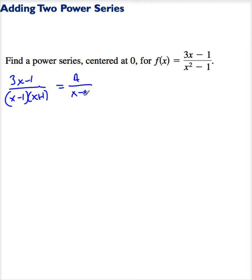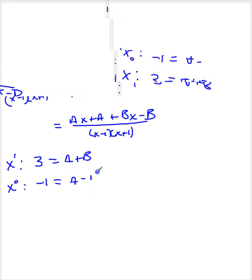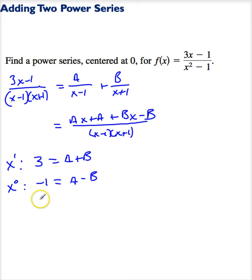a over x minus 1 plus b divided by x plus 1. Get a common denominator. So this is ax plus a plus bx minus b divided by x minus 1, x plus 1. So that tells me I need to equate my numerators. So my x to the first terms, I've got a 3 on the left side, is equal to a plus b, the x to the 0 power. So I have negative 1 is a minus b. Now what am I going to do here? Let me just add these two. So I have 2 is equal to 2a, or a is 1.